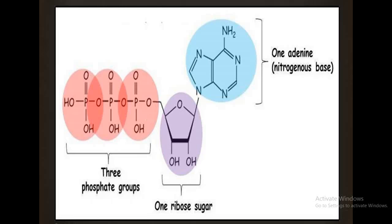To summarize: the units of a nucleotide are base, sugar, and phosphate group — this is called nucleotide. If you are asked what the units of a nucleoside are, remember that only the base and sugar are present — that is called nucleoside. This is the distinction between nucleoside and nucleotide.